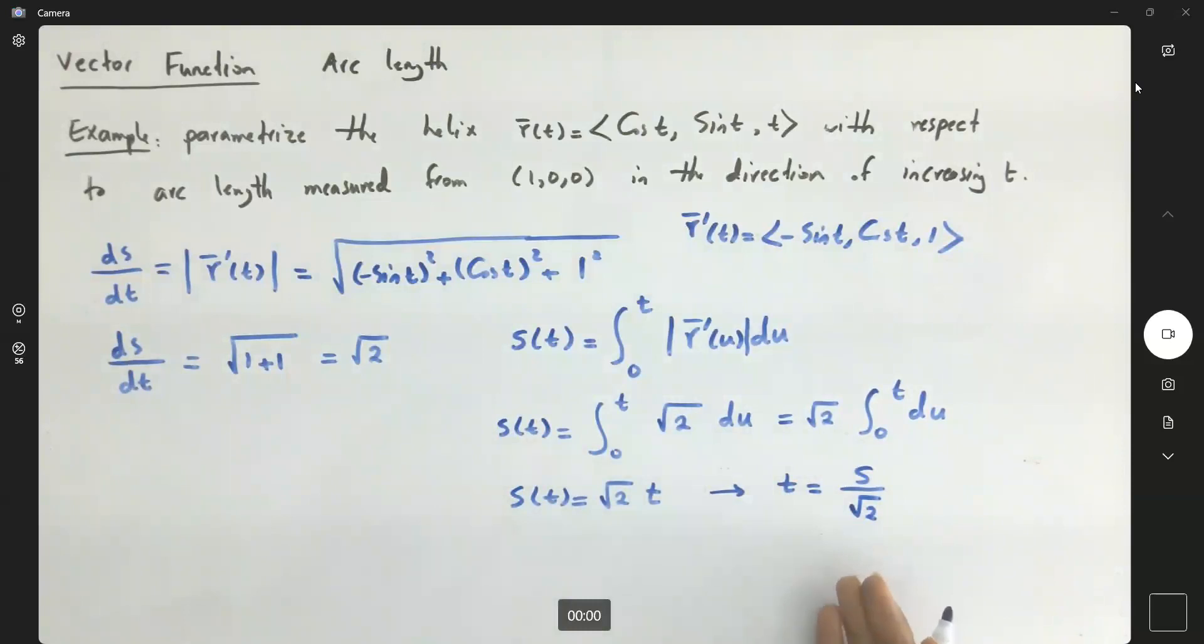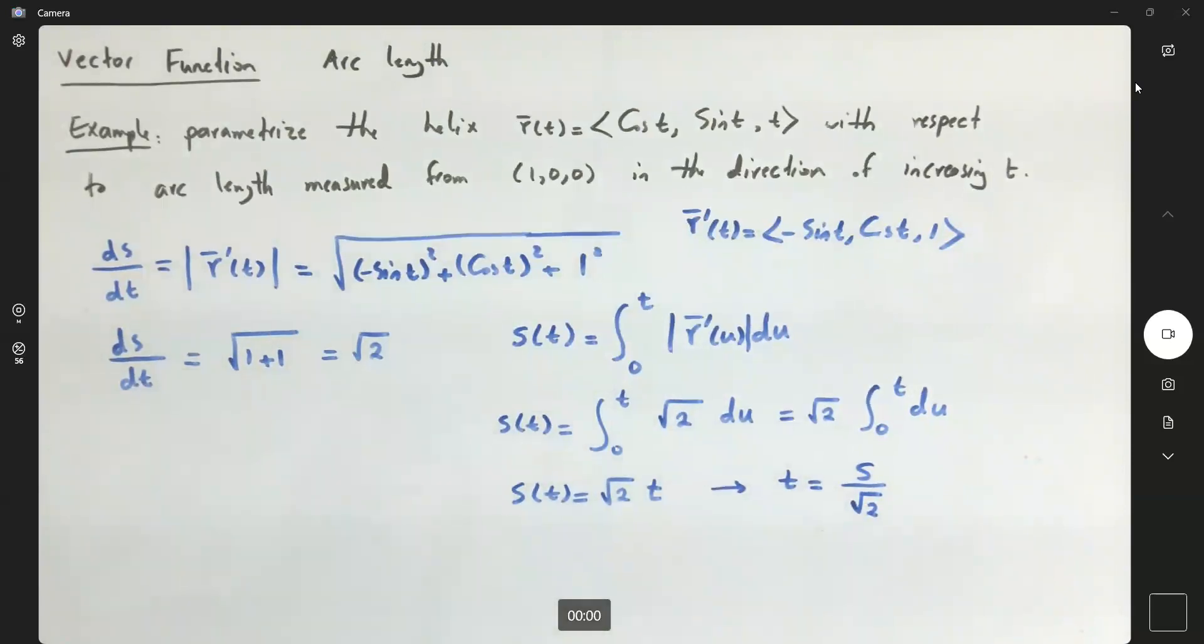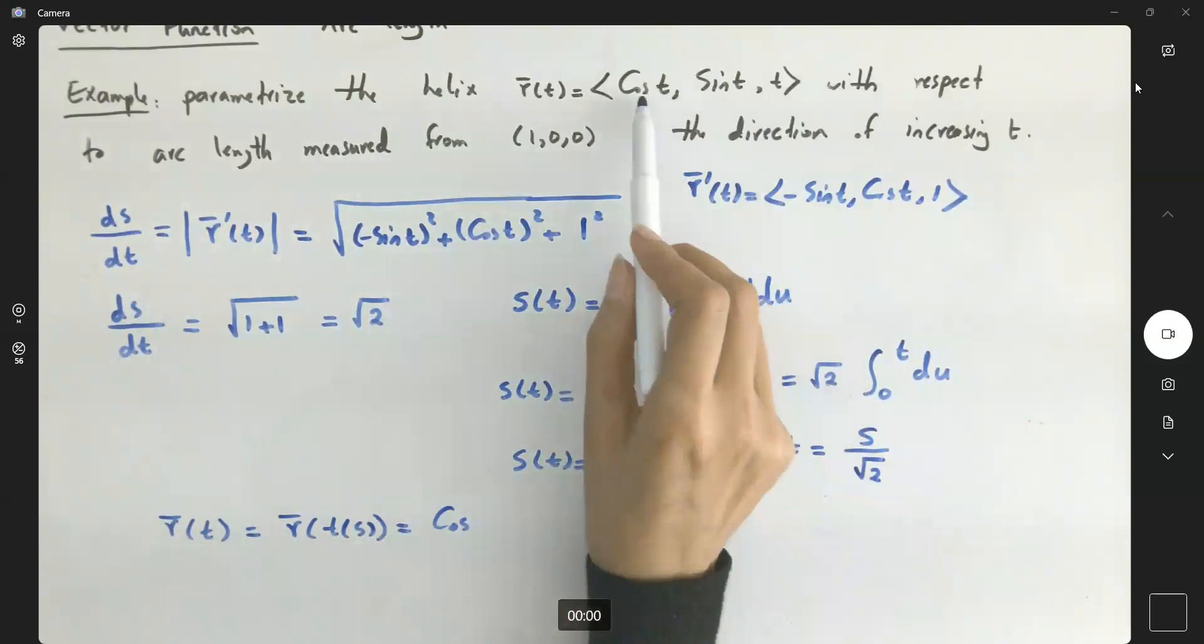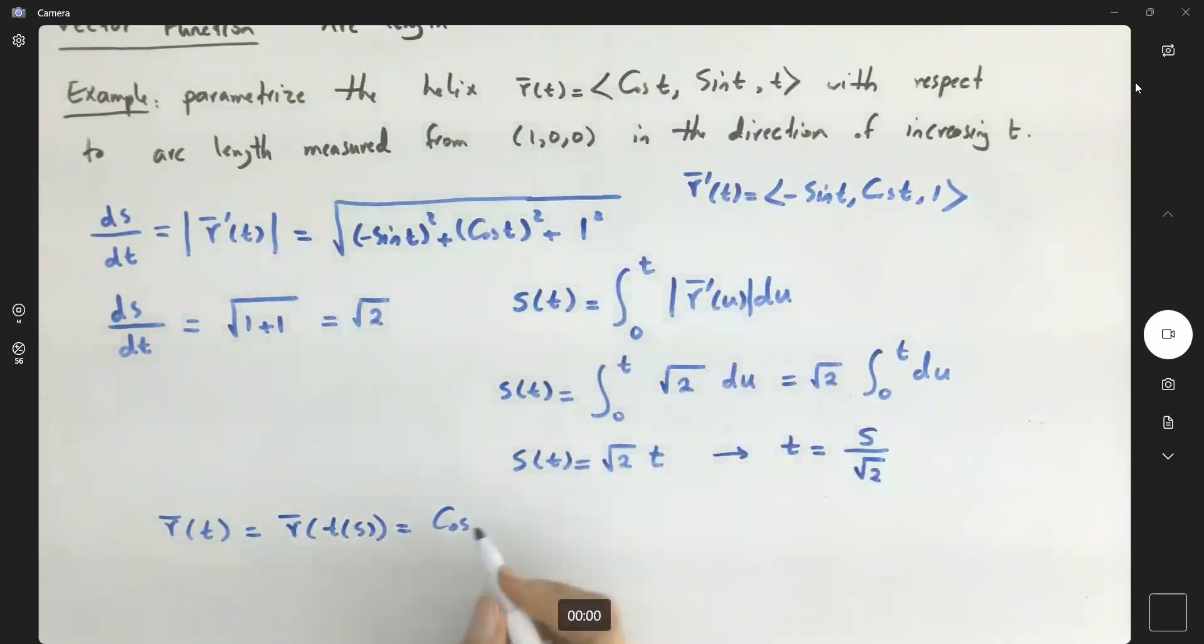So wherever you see t, you just substitute that, and you get r(t) which is now written as r(t(s)). It equals cosine of t, where t is now s over square root of 2, so you get s divided by square root of 2, then sine of s over square root of 2, and t is nothing but s over square root of 2.